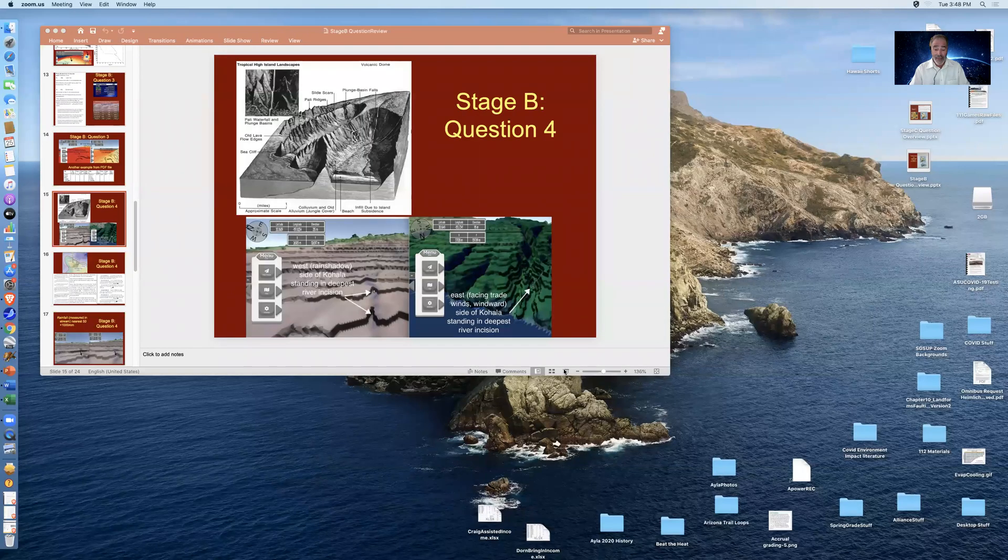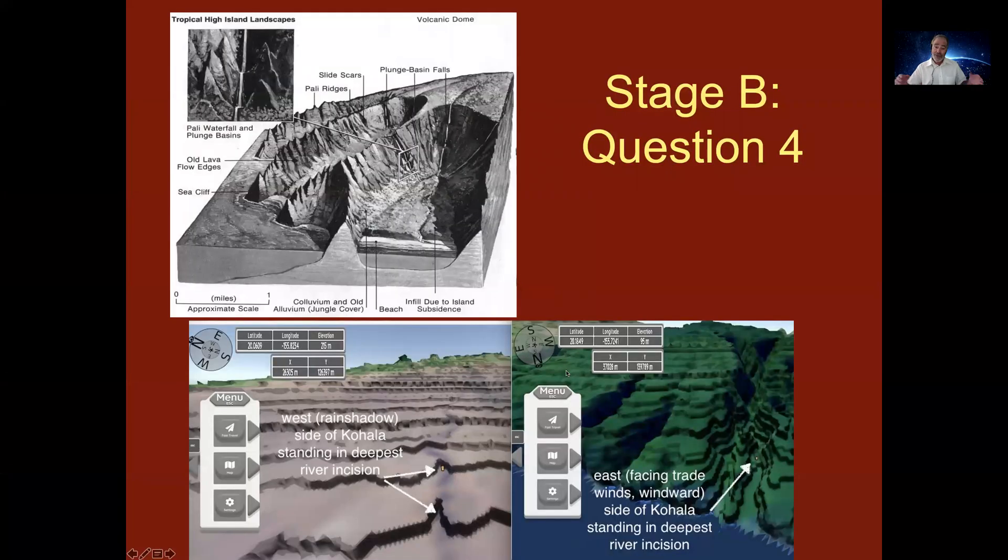Hi, my name is Ron Dorn and the purpose of this video is to provide a short overview of how to look at question four in stage B of the Hawaii Lab. I'll start sharing the screen and then move to the PowerPoint that I'm using to explain it.